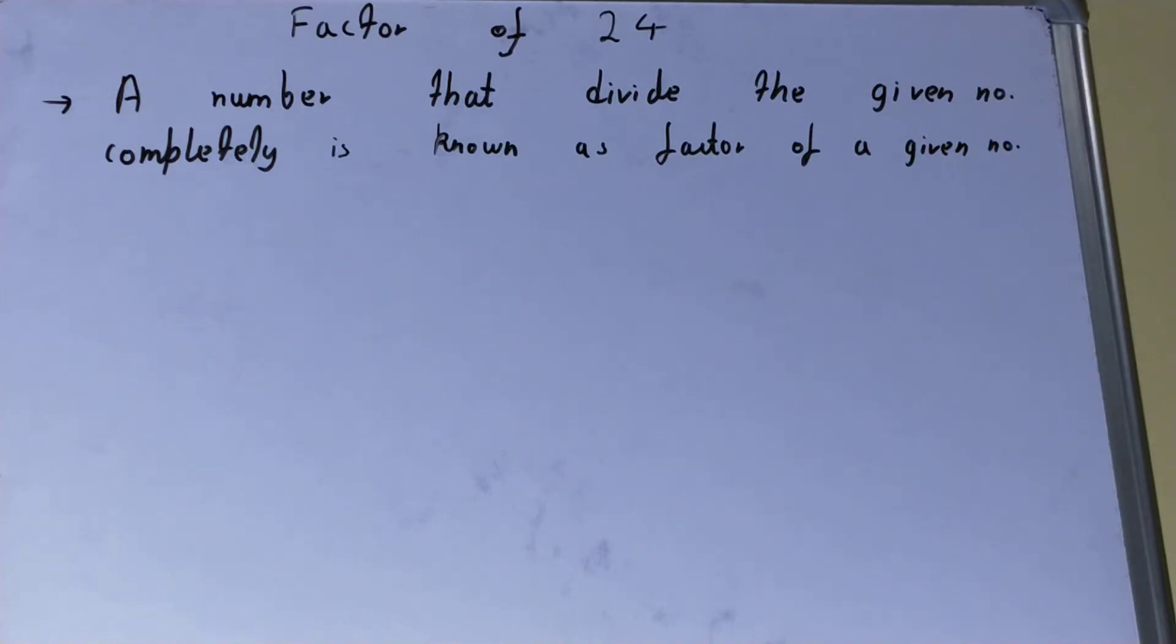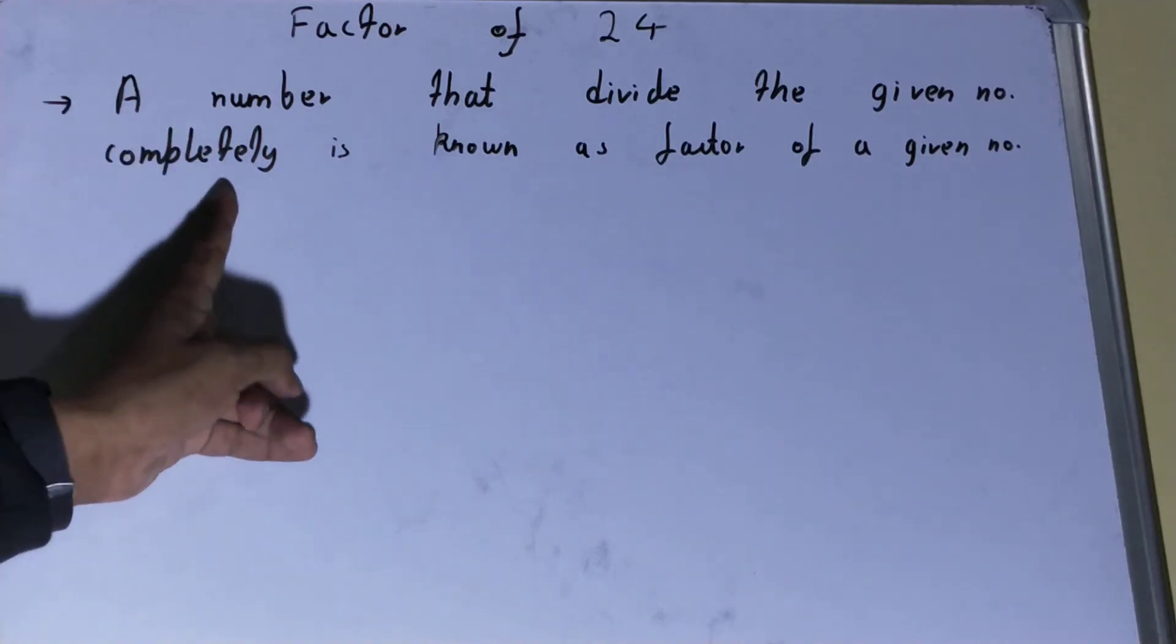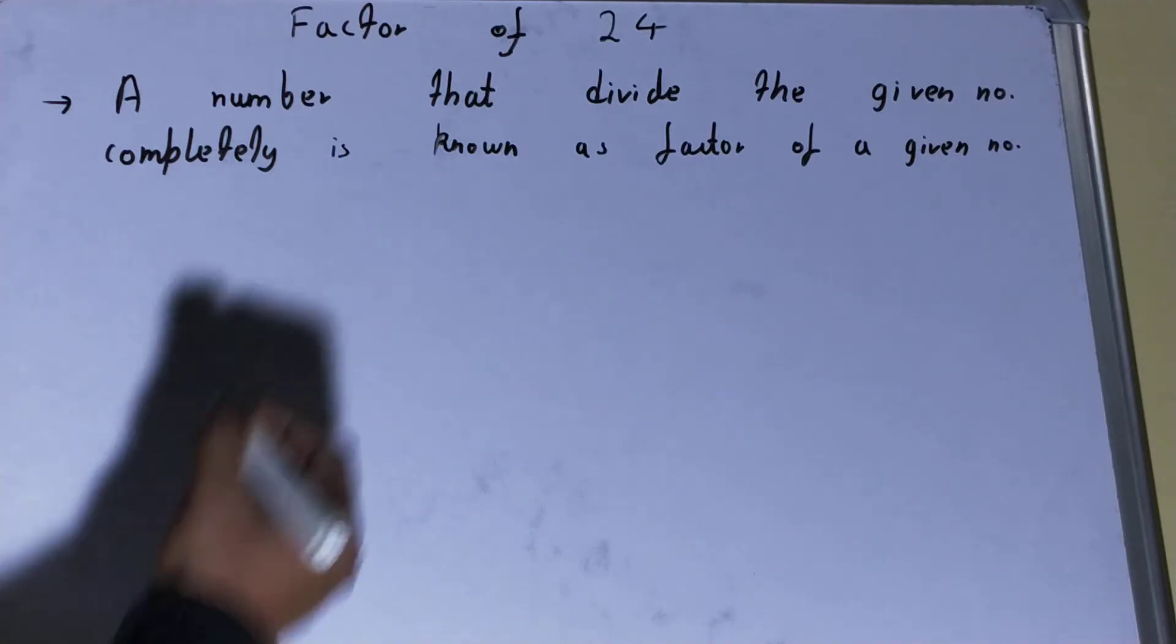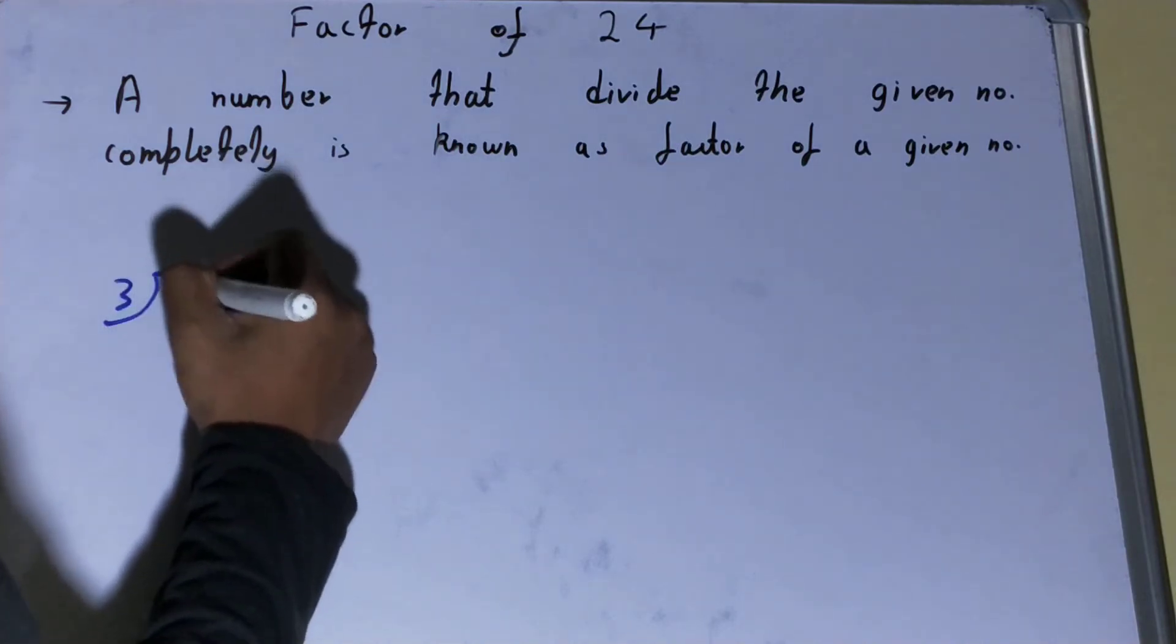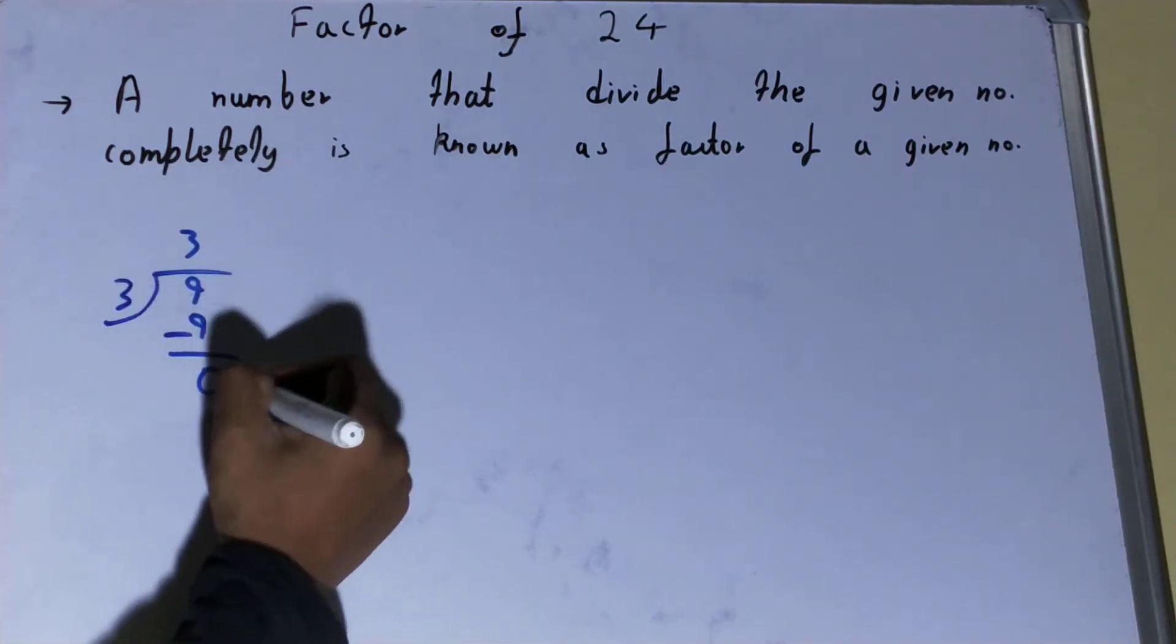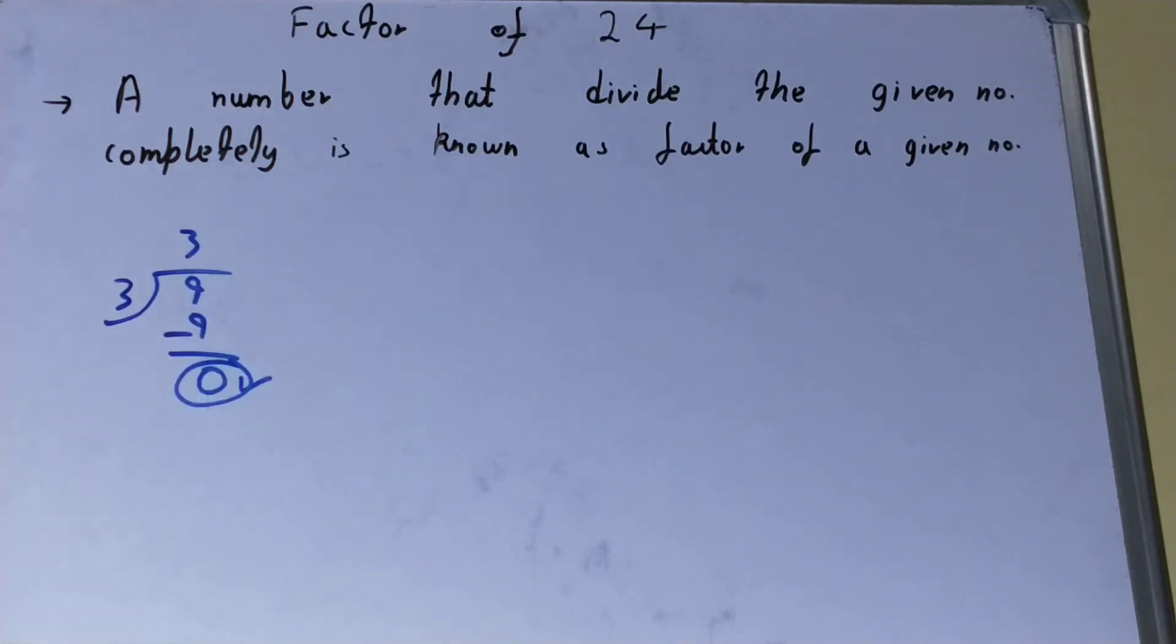So, a number that divides the given number completely—completely means without leaving any remainder or having a remainder as 0. For example, 3 divides 9, so 3 times 3 is 9. The remainder you have is 0, so only then you can call 3 as a factor of 9.